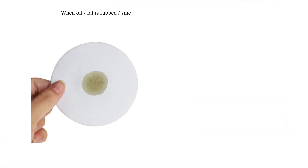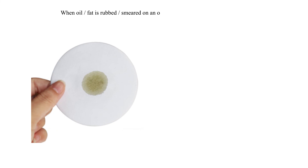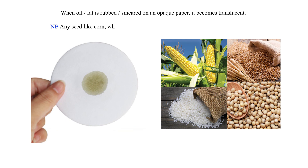When oil or fat is rubbed or smeared on an opaque paper, it becomes translucent. Note: Any seed such as corn, wheat, rice, or soya bean may be used instead of macadamia seed.